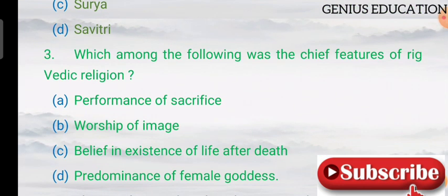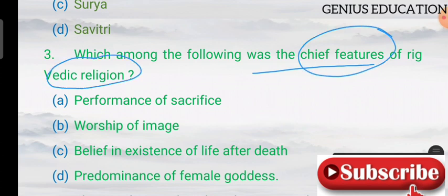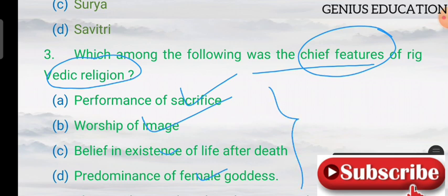Number 3 question: which among the following was a feature of Rig Vedic religion? Options are performance of sacrifice, worship of image, belief in existence of life after death, and predominance of female goddess. The answer is A — performance of sacrifice.